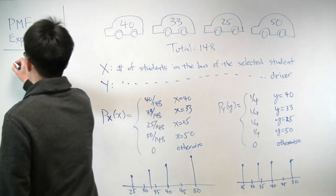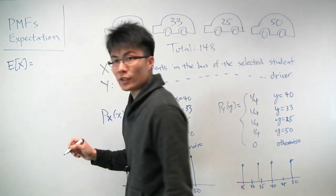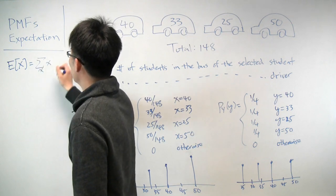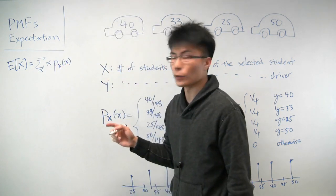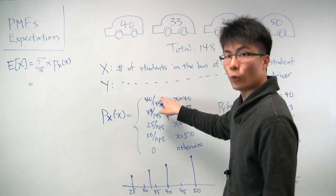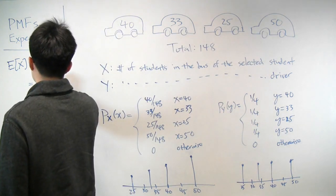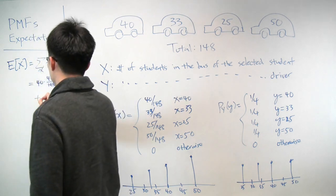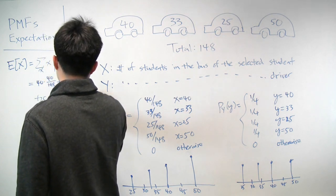So now let's actually calculate out what these expectations are. So as you recall, the expectation is just calculated out as a weighted sum. So for each possible value of x, you take that value, and you weight it by the probability of the random variable taking on that value. So in this case, it would be 40 times 40 over 148, 33 times 33 over 148, and so on.